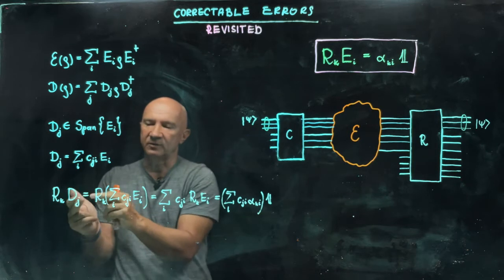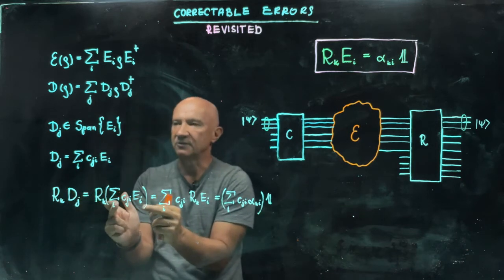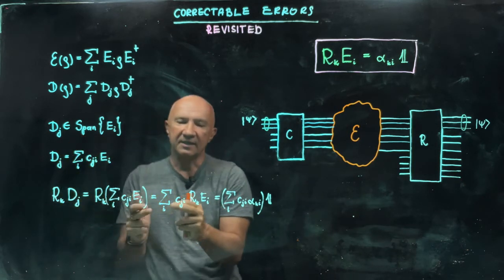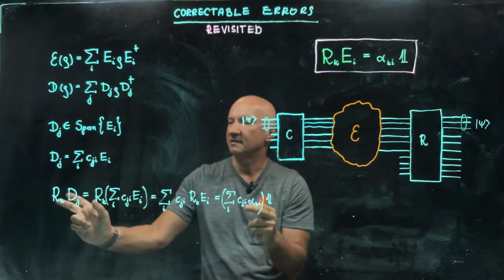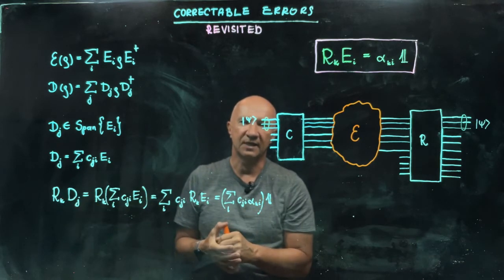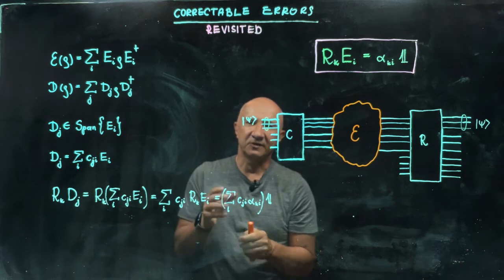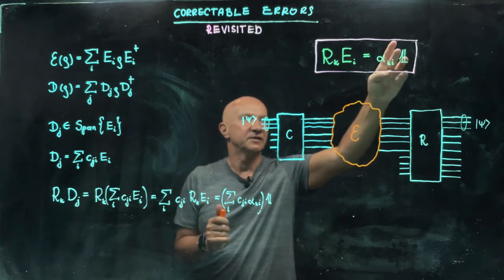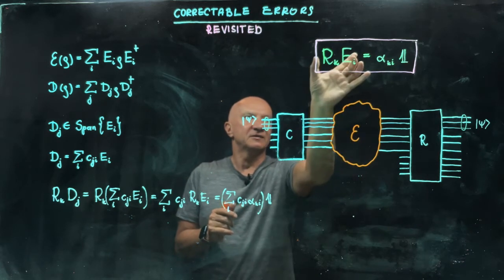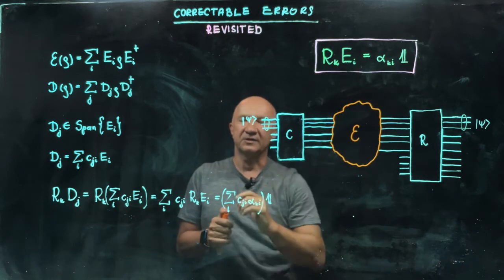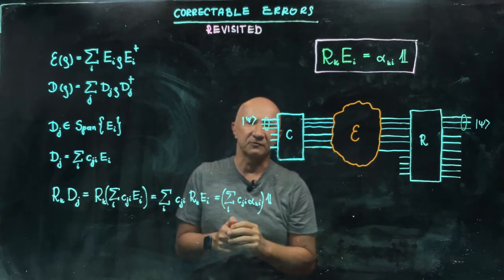So the product of RK with DJ, you substitute for DJ this expression here. And you can see that this product here is also proportional to the identity, the identity being the identity on the code space. So if you want, you can just put a projector operator here and sandwich this expression here with two projectors on the code space.